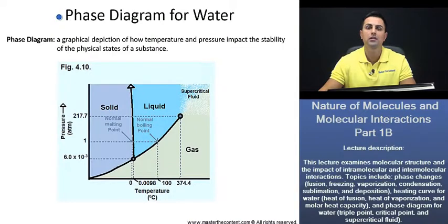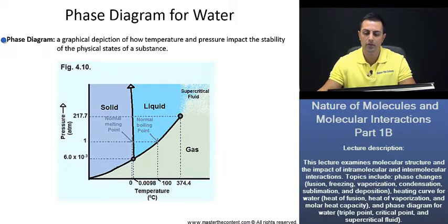Your career, our passion. Phase diagram for water. Let's begin here with a definition. A phase diagram is a graphical depiction of how temperature and pressure impact the stability of the physical states of a substance. And in our case, that's going to be water.